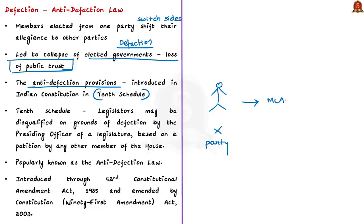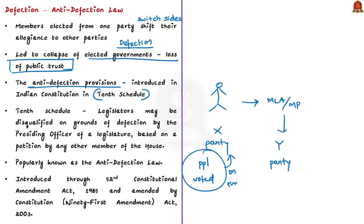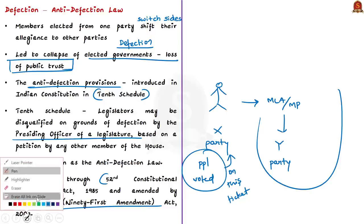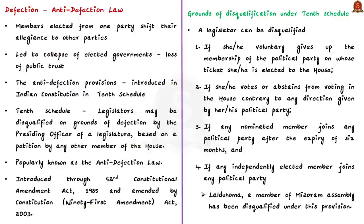A person gets elected on the ticket of a particular political party. After becoming a member of the legislature, the person switches to another party — this is contrary to public confidence because people voted for them thinking they belonged to the original party. The 10th Schedule of the Indian Constitution lays down the process by which legislators may be disqualified on grounds of defection by the presiding officer of a legislature, based on a petition by any other member of the house.